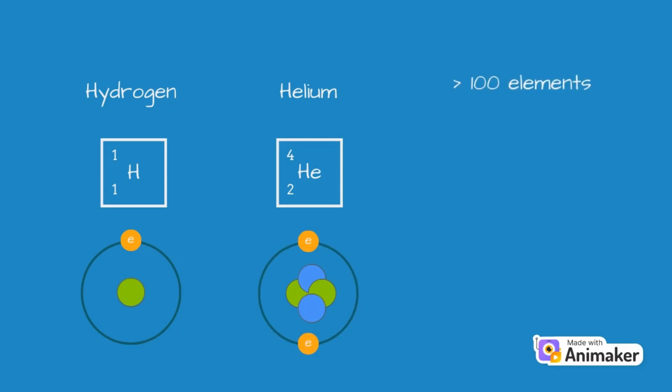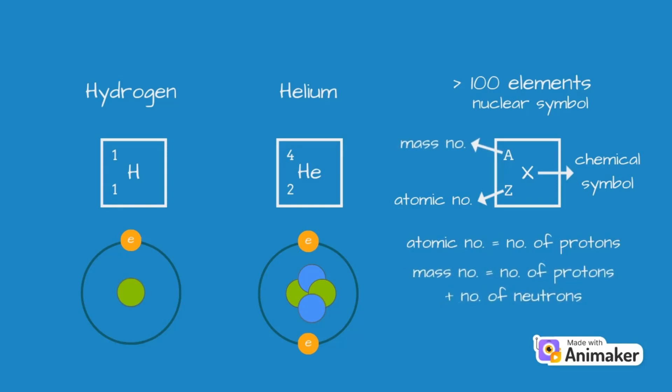Each element is represented by a nuclear symbol, which consists of its chemical symbol and two numbers. The number on the bottom left is called the atomic number, which is unique to the element, as it represents the number of protons that are present in the atoms of that element. The number on the top left is called the mass number, which is the total number of protons and neutrons present in the atoms of that element.